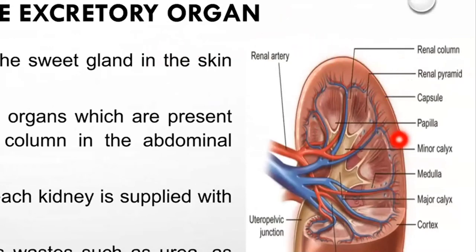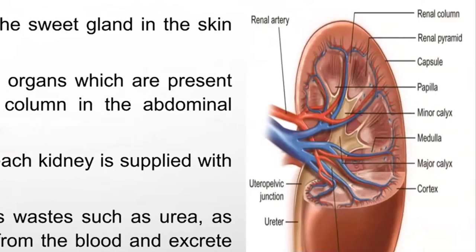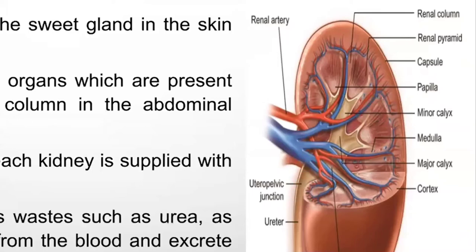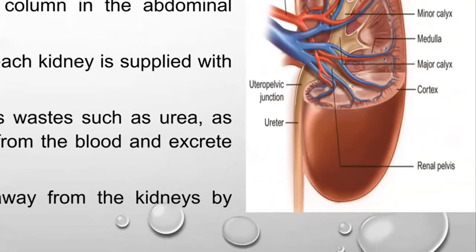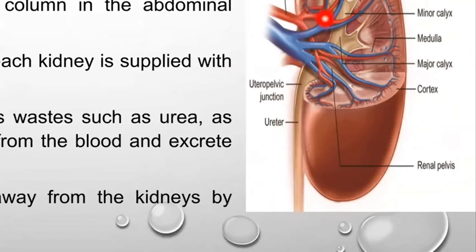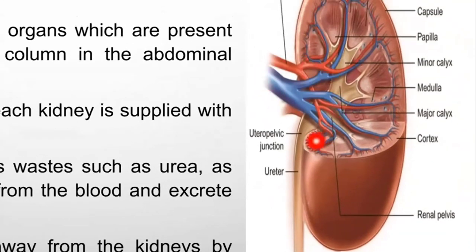The outer layer of the kidney is called the capsule. Inside, you find the cortex as the outer layer, then the medulla as the inner layer. There are major calyx and minor calyx, which finally open into the renal pelvis to form the ureteropelvic junction. From there the ureter arises. The hilum is the site where the ureter, veins, and artery emerge from the kidney.